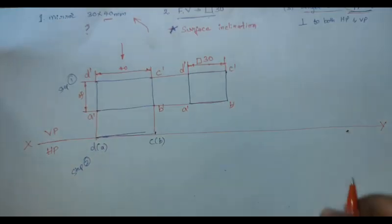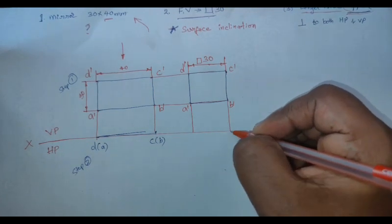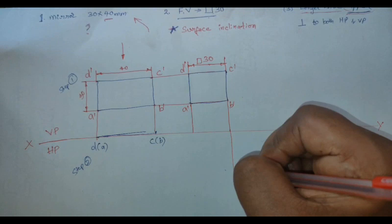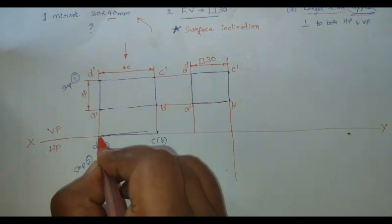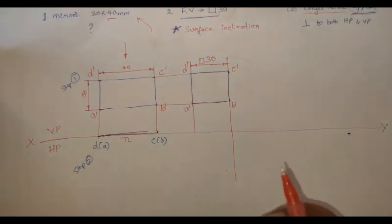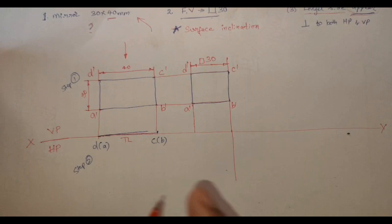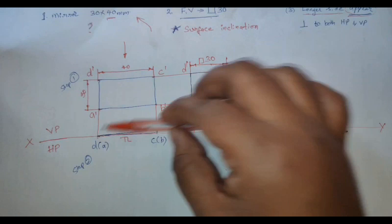Do these projections, projections, projected more. So we need to take the distance from D to C which is equal to 40. That is nothing but the true length. I will take the distance.